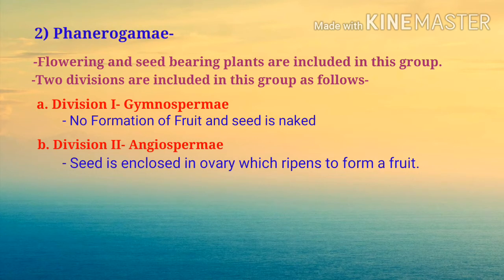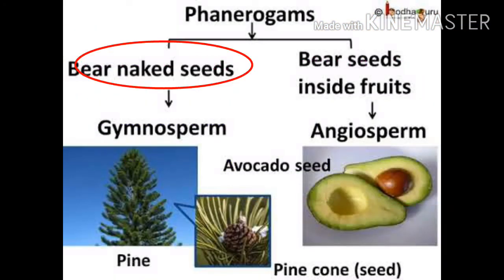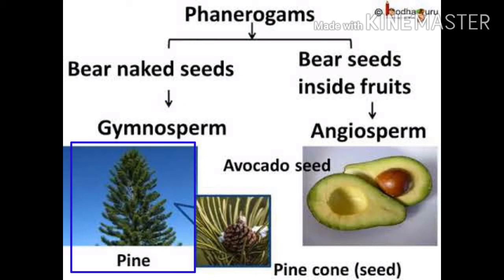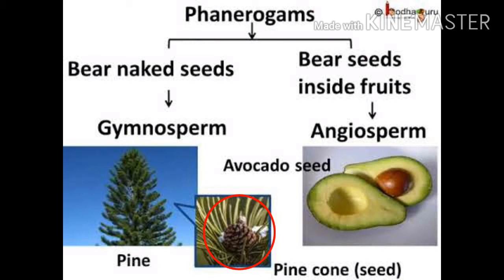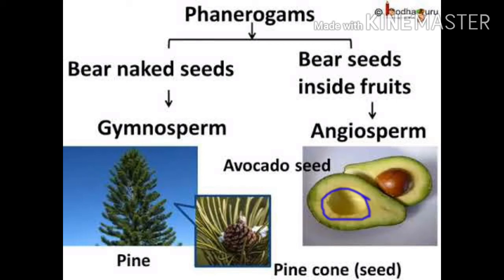Angiosperms also have two groups: monocotyledons and dicotyledons. Let's learn with examples. Phanerogams which bear naked seeds are gymnosperms — an example is the pine tree, which has a cone inside which there are naked seeds. Phanerogams which bear seeds inside fruits are angiosperms — an example is the avocado, where you can see that inside the fruit there is a seed enclosed within it.